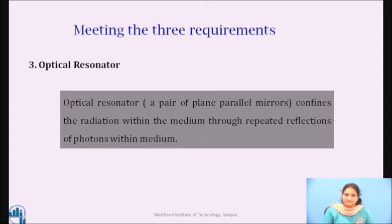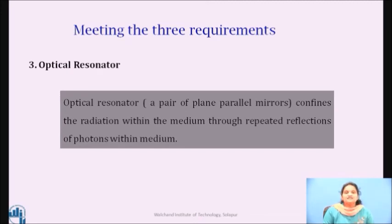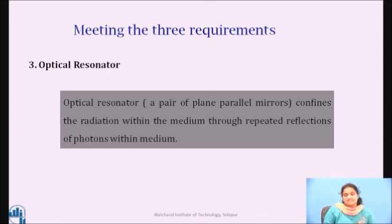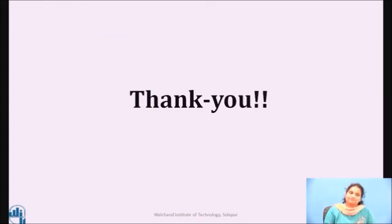The third requirement is of more photon density, which must be present in the active medium. If the laser medium is enclosed between a pair of optically plane parallel mirrors, photon density builds up to a very high value through repeated reflections of photons which remain within the medium. Such an arrangement is known as an optical resonant cavity or optical resonator. In this session, we have seen why amplification of light is required and how to achieve it. In the next session, we will see the different components of a laser. Thank you.